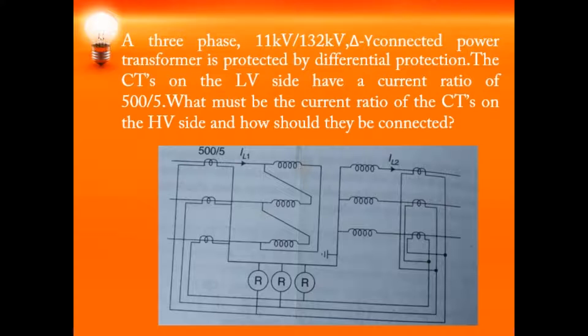The CTs on the LV side have a current ratio of 500/5. We need to find the current ratio of the CTs on the HV side and how they are connected. For the circulating current to be in phase opposition, the CTs on the delta side (LV side) should be connected in star, and the CTs on the star-connected HV side must be connected in delta.